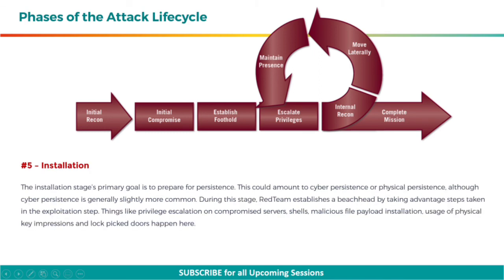The next step is installation. The installation stage's primary goal is to prepare for persistence. This could amount to cyber persistence or physical persistence, although cyber persistence is generally slightly more common. During this stage, the red team establishes a beachhead by taking advantage of steps taken in the exploitation step — things like privilege escalation on compromised servers, shells, malicious file payload installation, and usage of physical key impressions and lock-picked doors.